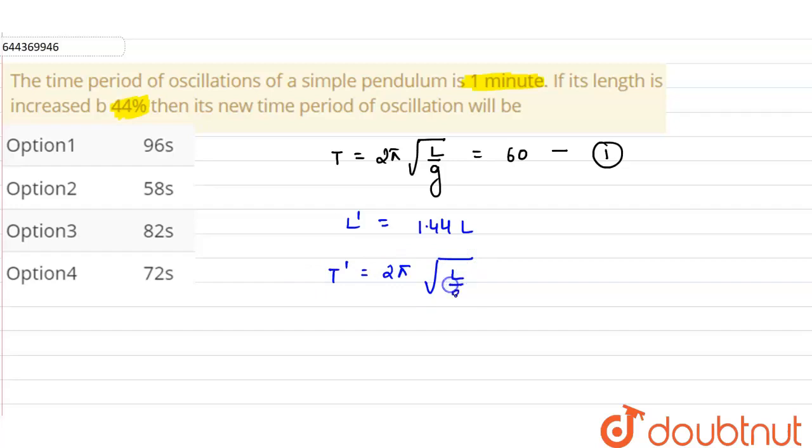This will be equals to 2π under root of 1.44L upon g. So this will be equals to 1.2 into 2π under root L upon g.